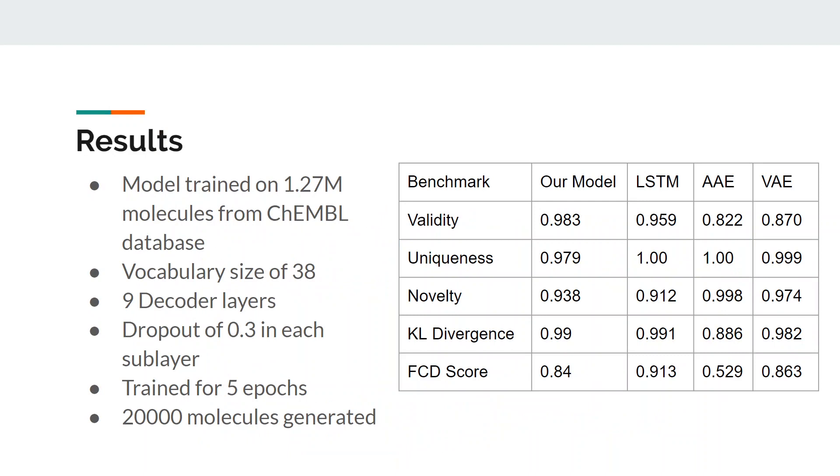The transformer XL model was trained on 1.27 million molecules obtained from the Campbell database with a vocabulary size of 38. The neural network consisted of 9 decoder layers with a dropout of 0.3 implemented in each of the sublayers present in them. The results improved significantly after adding dropout to the network which consisted of 30 million parameters. We used Adam optimizer and trained the model for 5 epochs.